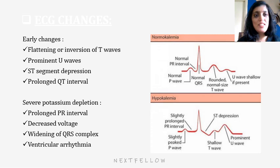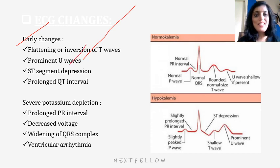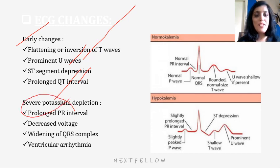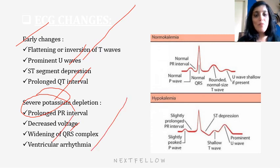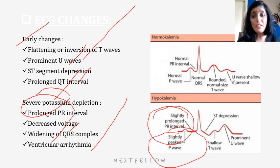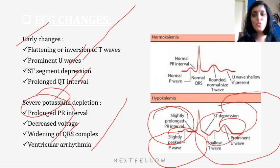Coming to the ECG changes in hypokalemia: early changes are flattening or inversion of T waves, prominent U waves, ST segment depression, and prolonged QT interval. In case of severe potassium depletion there is prolonged PR interval, decreased voltage of the QRS complex, widening of the QRS complex, and ventricular arrhythmias. There are also slightly peaked P waves and the presence of a U wave.